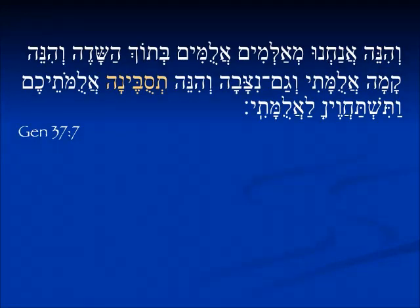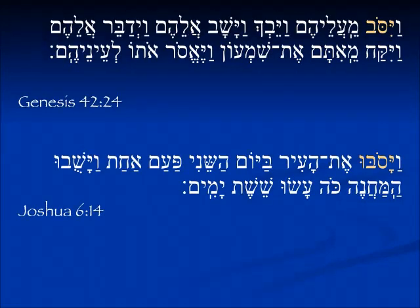In Genesis 37:7, we see the feminine plural. This is from Joseph's dream, and he's telling about it — talking about the sheaves of his brothers. V'hinei tisubena alumotechem v'tishtachevena la'alumati — behold, tisubena, they are surrounding, they are going around — whose sheaves? His brothers' sheaves. It's a feminine plural, alumot. They're surrounding and also bowing down to my sheave. In a third person singular, speaking when Joseph is with his brothers and before he has revealed himself: v'yiso me'alehem v'yifk — and he turned himself away from them, and he wept. Very touching scene.